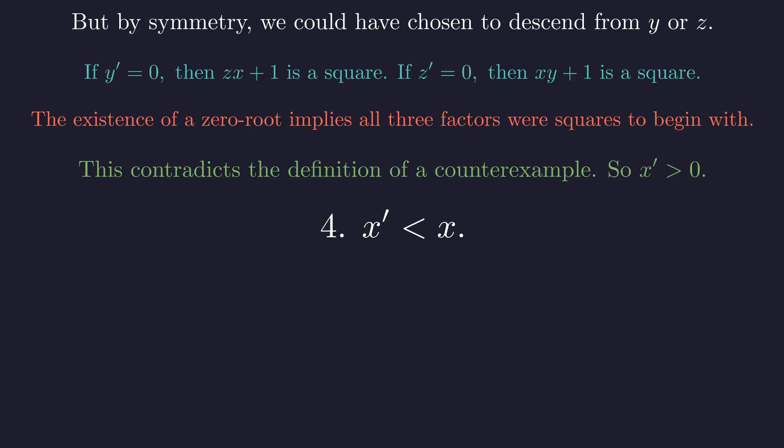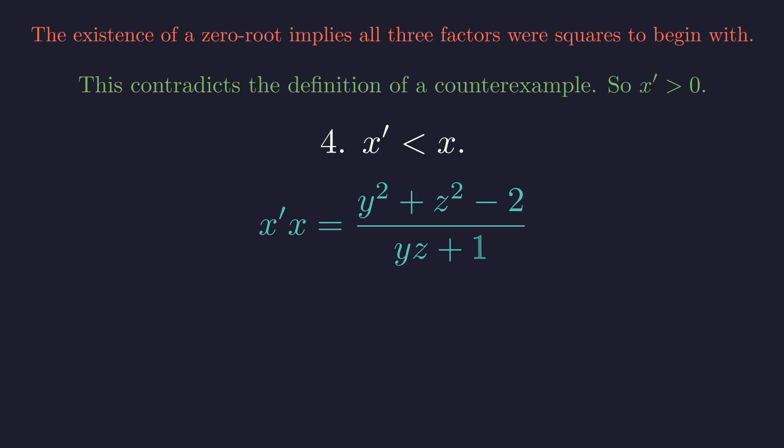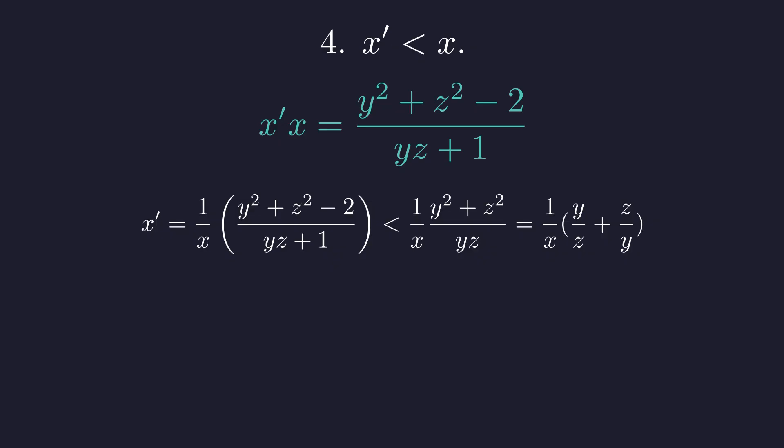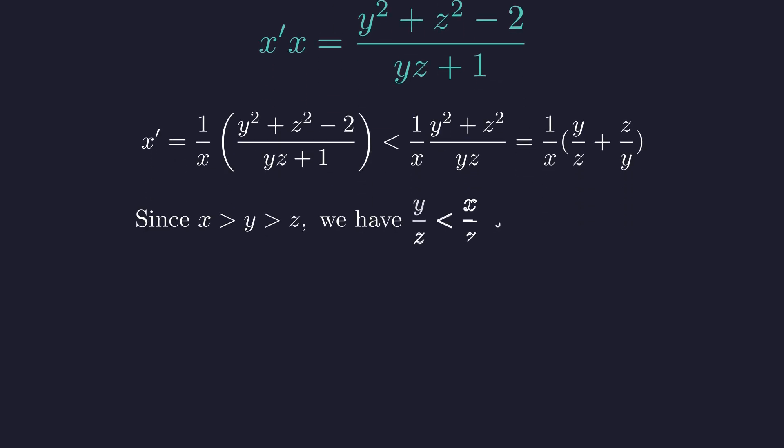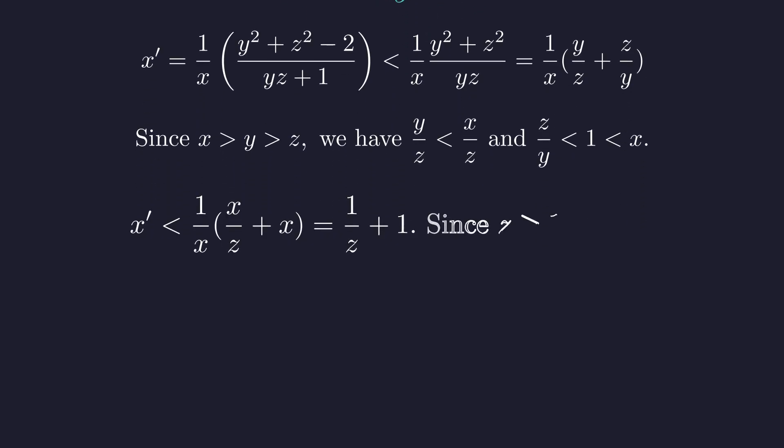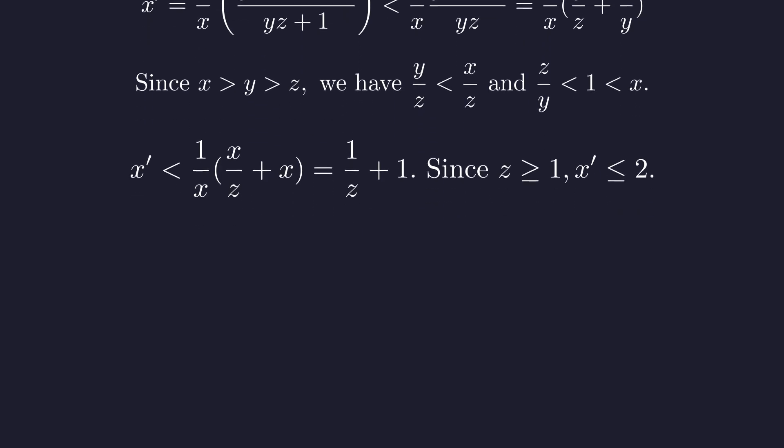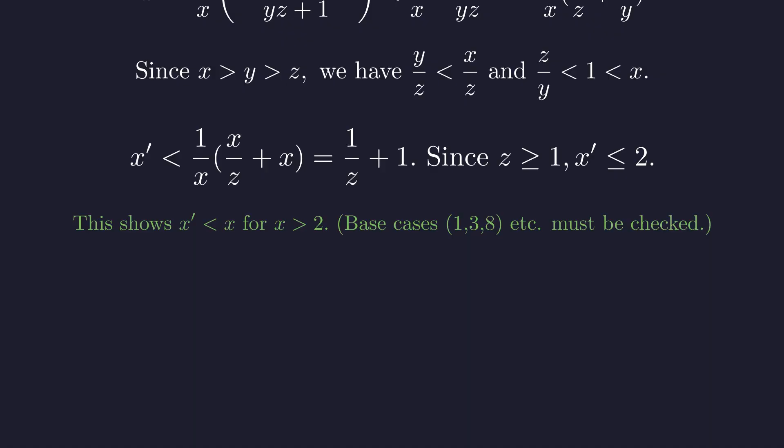Now for the final and most important property: x prime is actually smaller than x. This is where the descent happens. From the Vieta relations, we get this expression for x times x prime. To show x prime is smaller than x, we need to show this product is less than x squared. After some algebra, we can bound x prime by 1 over x times this expression involving y over z plus z over y. Since we ordered our variables with x biggest and z smallest, we can get even better bounds on these terms. This gives us the bound that x prime is less than 1 over z plus 1. Since z is at least 1, x prime can be at most 2. This is the key insight. Whenever x is bigger than 2, we've constructed a smaller solution. The few remaining small cases can be checked directly, and none of them are actually counterexamples.